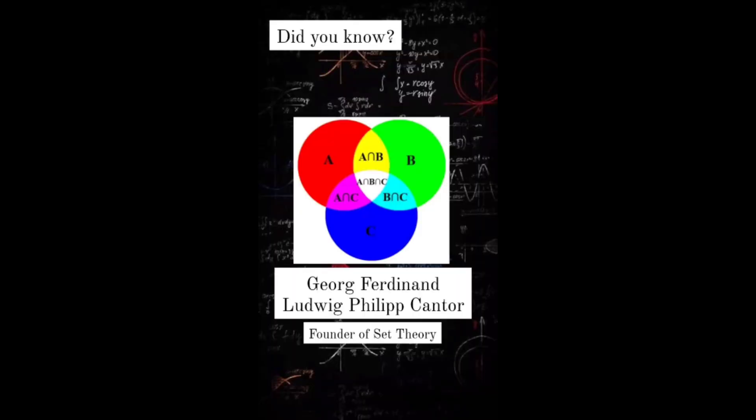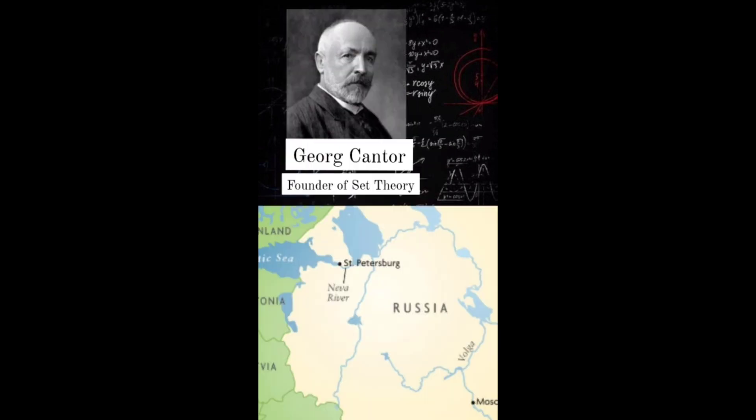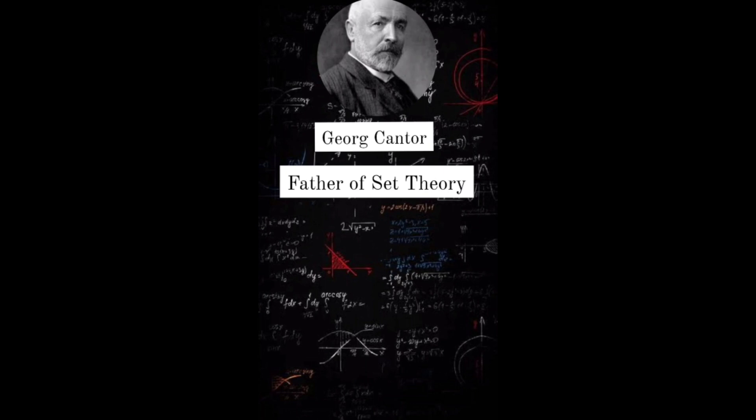Did you know? Set theory was founded by a German mathematician named George Ferdinand Ludwig Philipp Cantor. He was born in 1845 in St. Petersburg, Russia and died in 1918 in Halle, Germany. He was known today as the father of set theory.